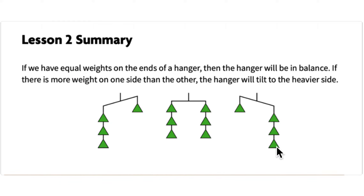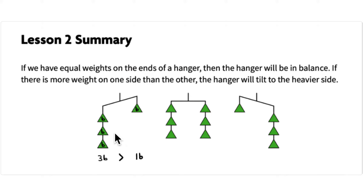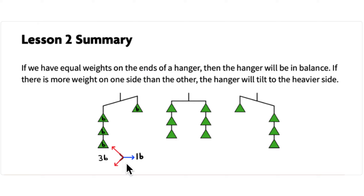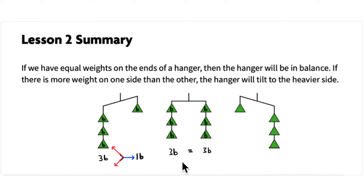In this case, three B's or three triangles on the left are heavier — that's greater than one B or one triangle on the right side. To read the greater than symbol, remember it opens towards the greater amount, so it opens towards three B and points towards the lesser amount. It's read left to right: three B is greater than one B.